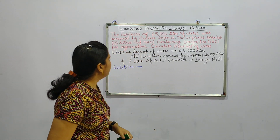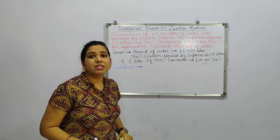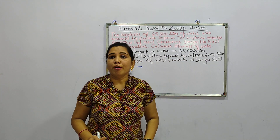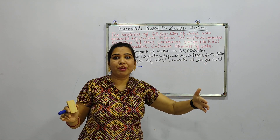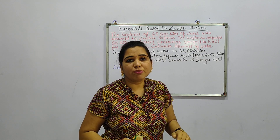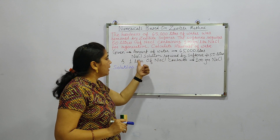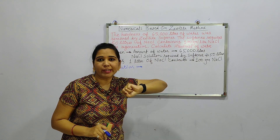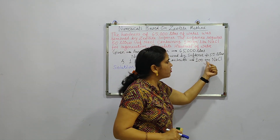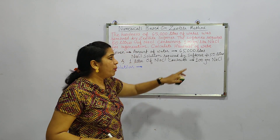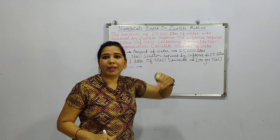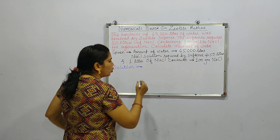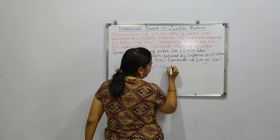So how much solid NaCl is required by the softener — from that we can calculate the hardness present in that water sample. The quantity of water given is 65,000 liters. NaCl solution required by the softener is 50 liters, and each 1 liter of NaCl solution contains 100 grams of solid NaCl.